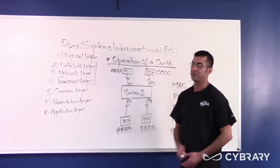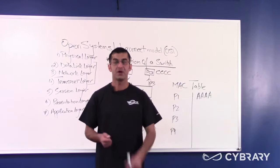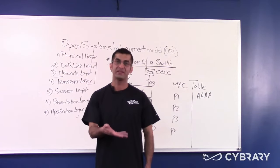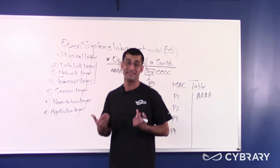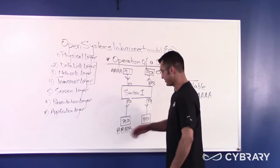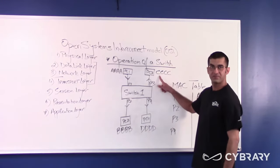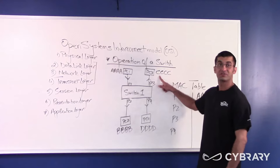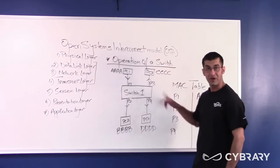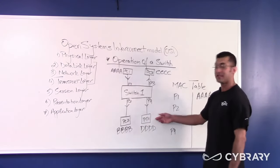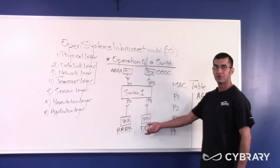All of the devices get the frame. PC2 looks at the destination MAC address field of the frame — which says DDDD — and compares it with its own MAC address, BBBB. It doesn't match, so PC2 drops the frame. Same with PC3: DDDD does not match CCCC, so PC3 drops the frame. In the case of PC4, the destination MAC address field matches PC4's MAC address, so PC4 accepts the frame.